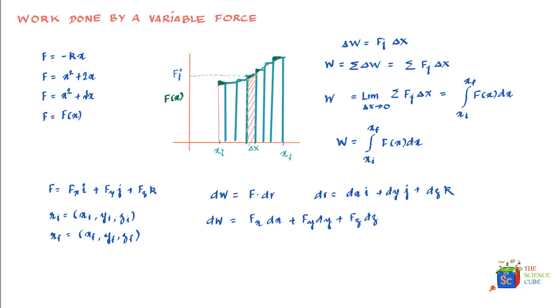we integrate dW from ri to rf, we'll have to put an integral on both sides. This would be xi to xf, this would be yi to yf, and this would be zi to zf. So the total work done equals the integral on the right-hand side.